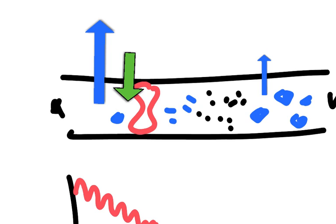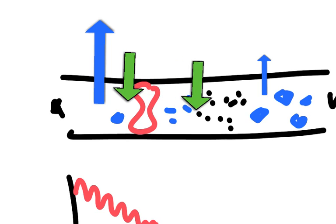If you have a leaky pipe, the beginning will have a bigger pressure than at the end where all the fluid is leaking out. We've still got the osmotic pressure, which is in opposition to the hydrostatic pressure. So at the venous end, the osmotic pressure drags the fluid back in, whereas at the arterial end, the hydrostatic pressure forces it out.